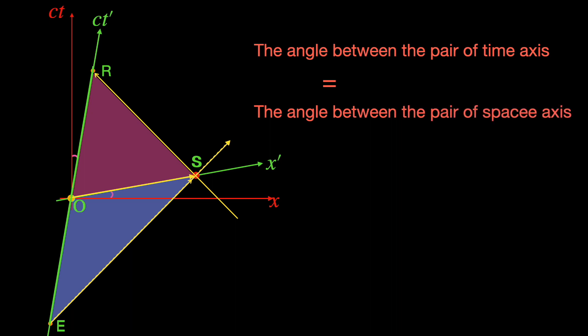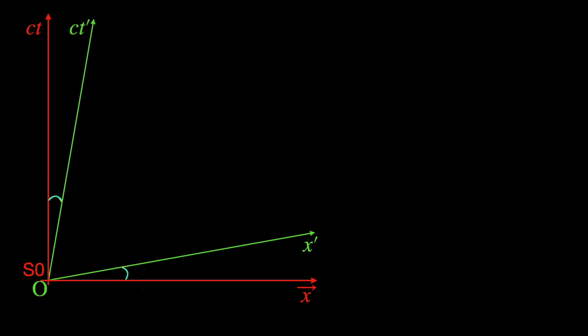We have already determined this angle to be tan inverse of v by c coming from the relative velocity v by c of the moving frame S1 with respect to S0. But why is this angle so important? Because it will help us express x prime p and ct prime p the space and time coordinates of event p measured in the moving frame S1 in terms of xp and ctp the space and time coordinates measured in the rest frame S0.